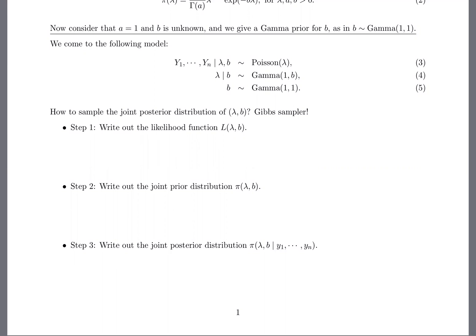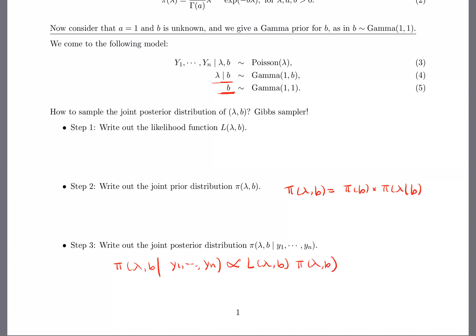For step two, you write the joint prior distribution of lambda and b together. Equation five is the marginal for b, and equation four is the conditional of lambda given b. To get the joint prior, you multiply the marginal of b by the conditional of lambda given b. So the joint prior is the product of equations four and five. From probability theory, the joint posterior is then proportional to the likelihood times the joint prior.